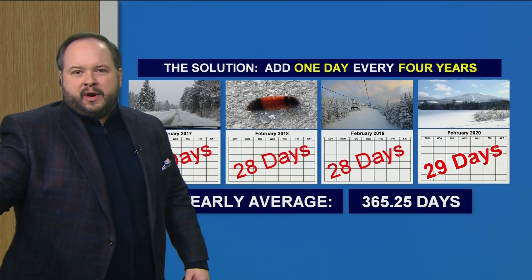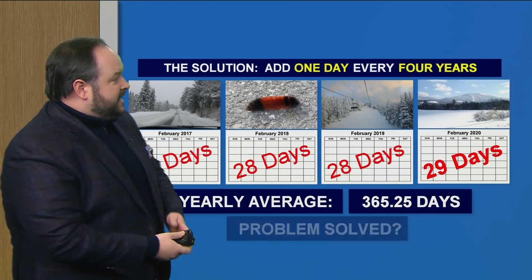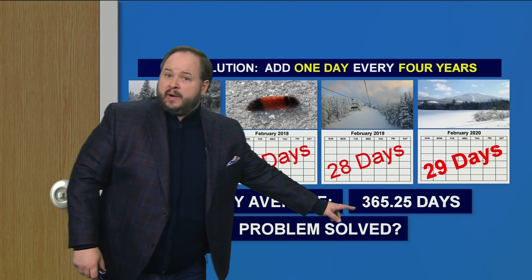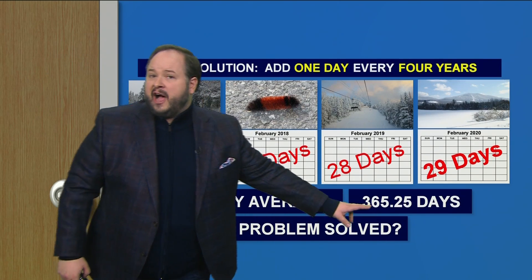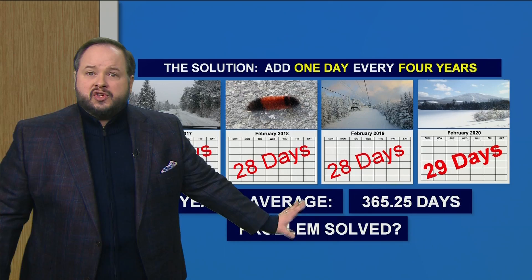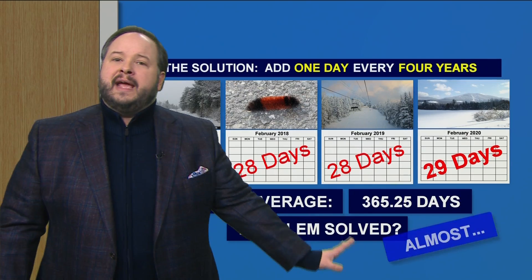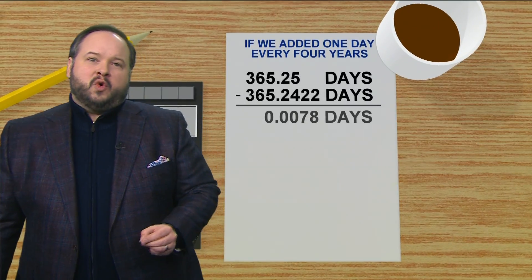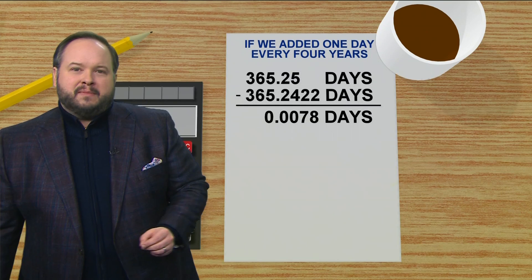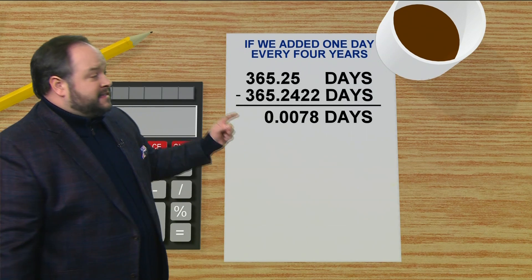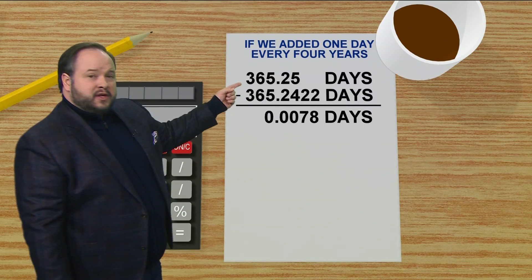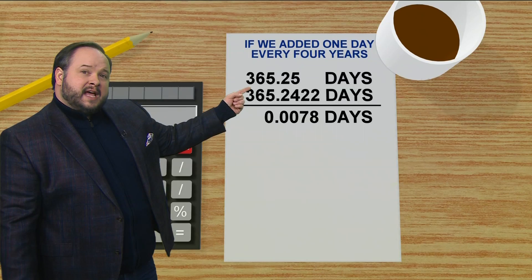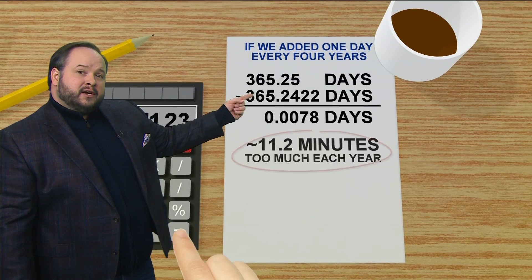So the solution: add one day every four years to get the yearly average to 365.25 days. That should solve the problem, right? Almost, but not quite. When you do the math, there is still some time left over if you add that extra quarter of a day on a yearly average.